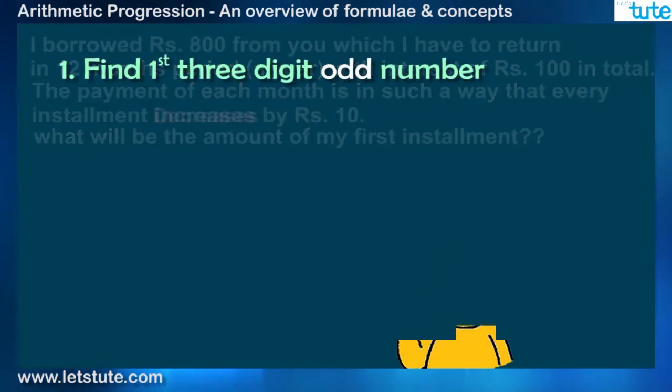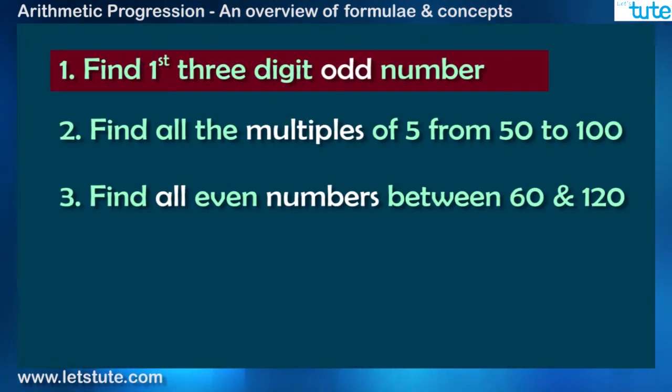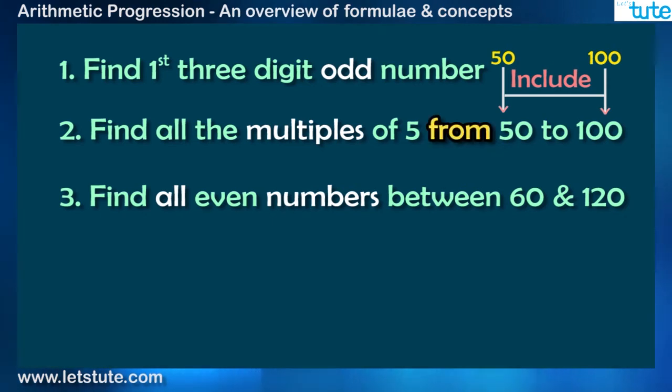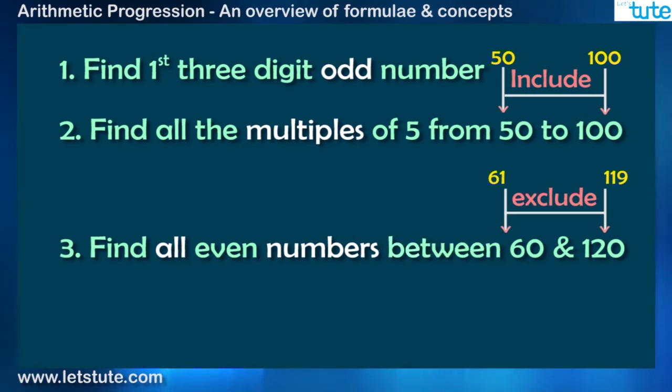One of the most common types of question is asked to find the number of terms in some interval, like first three-digit odd numbers, multiple of 5 from 50 to 100, or some other. So note down some points over here. When the range is given as from, include both the endpoints. And when it is set between, then exclude those endpoints.